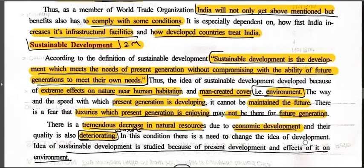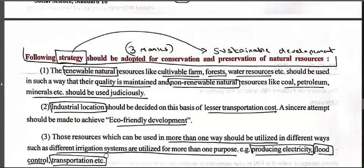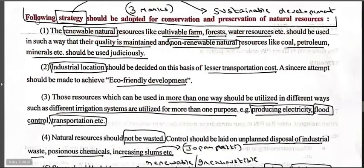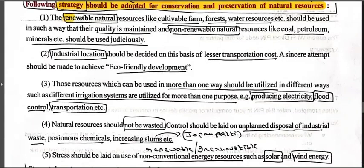In this condition there is a need to change the idea of development. Following strategies should be adopted for conservation and preservation of natural resources — this is a three mark question. First: renewable natural resources like cultivable farmland, forests, and water reserves should be used in such a way that their quality is maintained. Second: non-renewable resources like coal, petroleum, and minerals should be used judiciously — limited use only. Third: industrial location should be decided on the basis of lesser transportation cost.